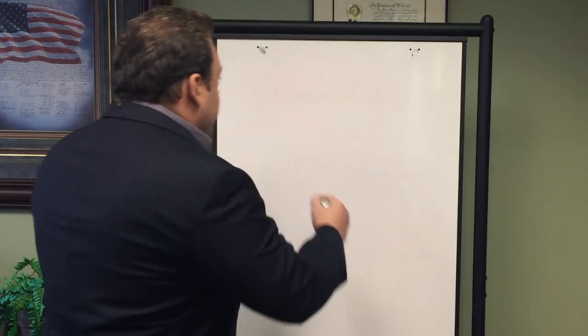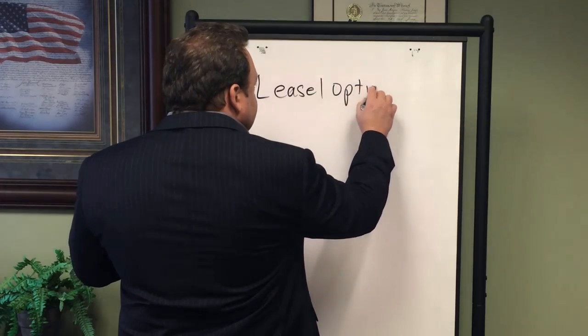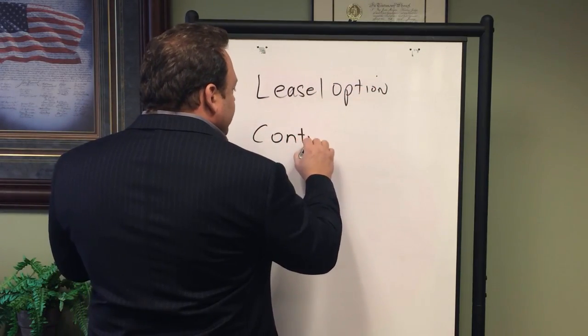Hi, I'm attorney Bill Bronchick and in this video I'd like to explore with you the difference between a lease option, lease with option, or lease purchase and an agreement for deed, contract for deed, or installment land contract. Let's start with the designation of the names. Lease option, lease purchase, rent to own — all the same animal. Contract for deed, installment land contract, agreement for deed, bond for title — all the same animal. So basically we have two different things: a lease option or lease with option, and a contract for deed.